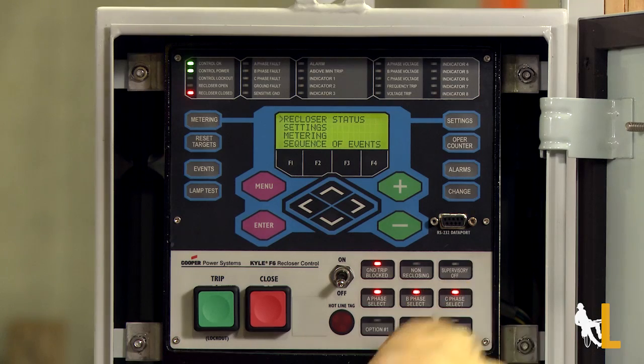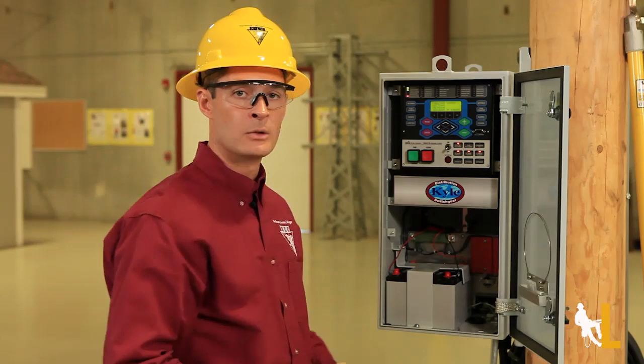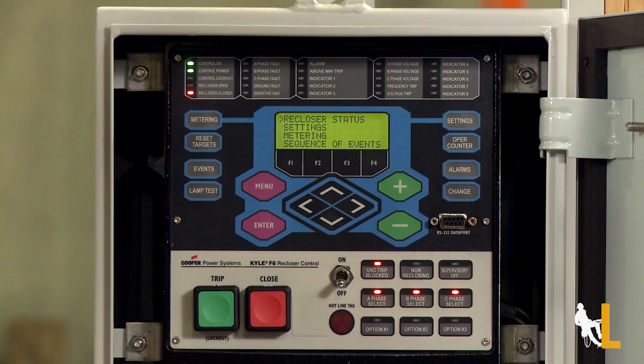Supervisory off will disable remote operation. If any of the phase select function keys are illuminated, the trip and close will only operate those phases. And these options buttons can be customized for different functions.